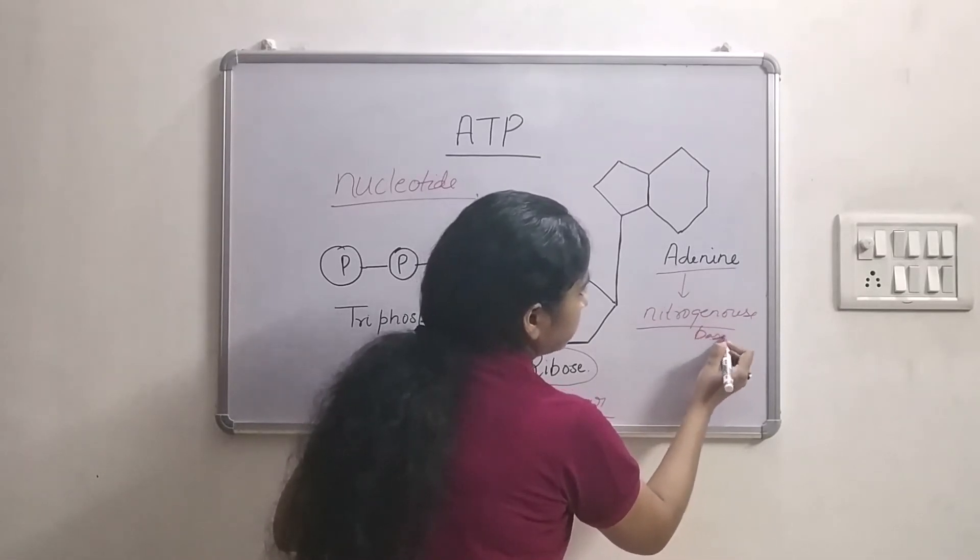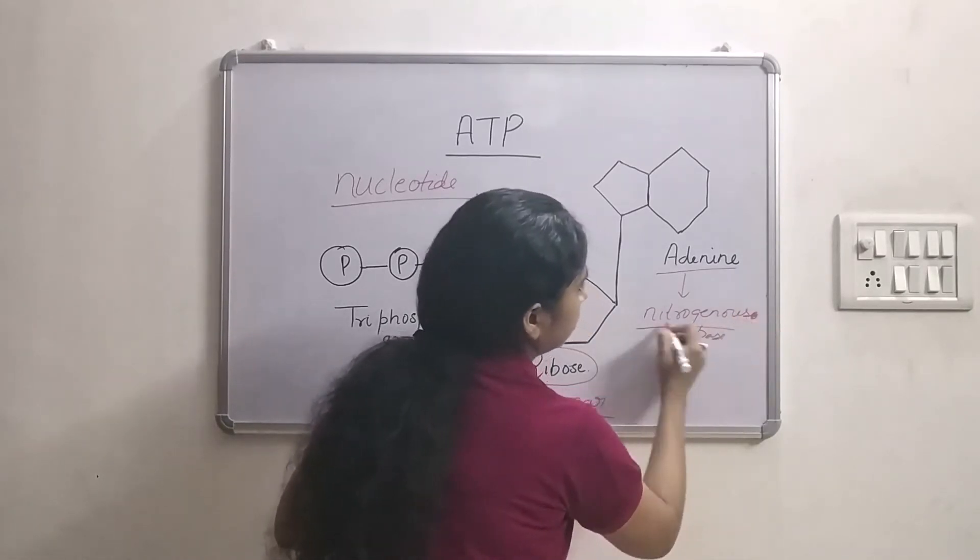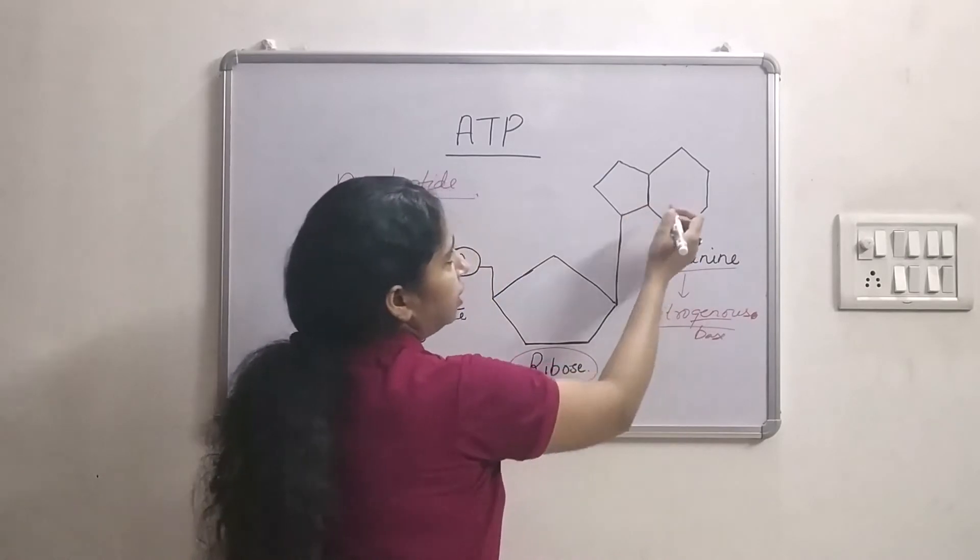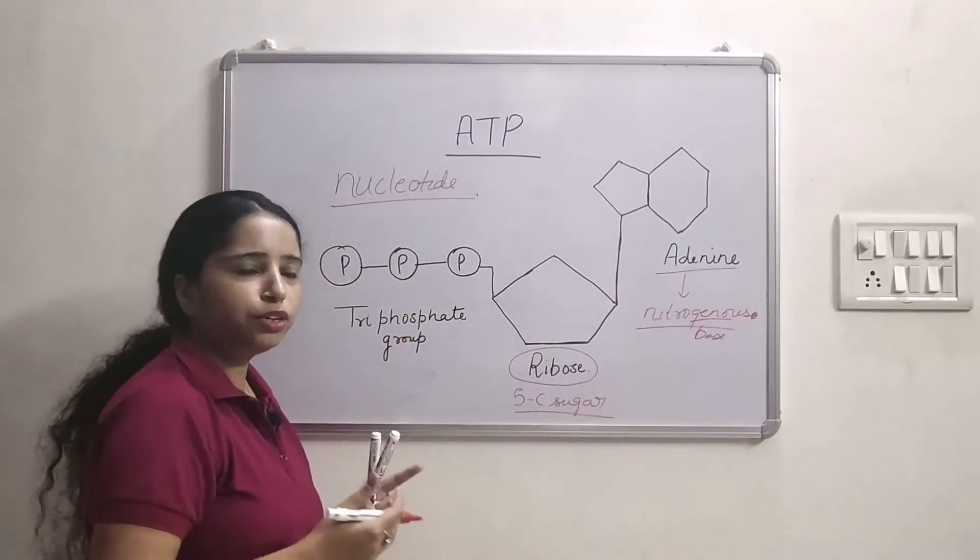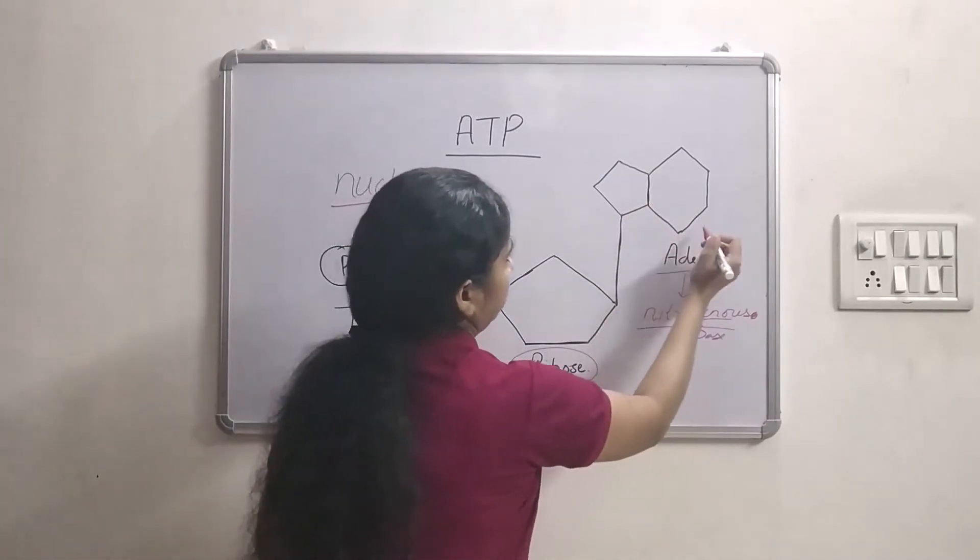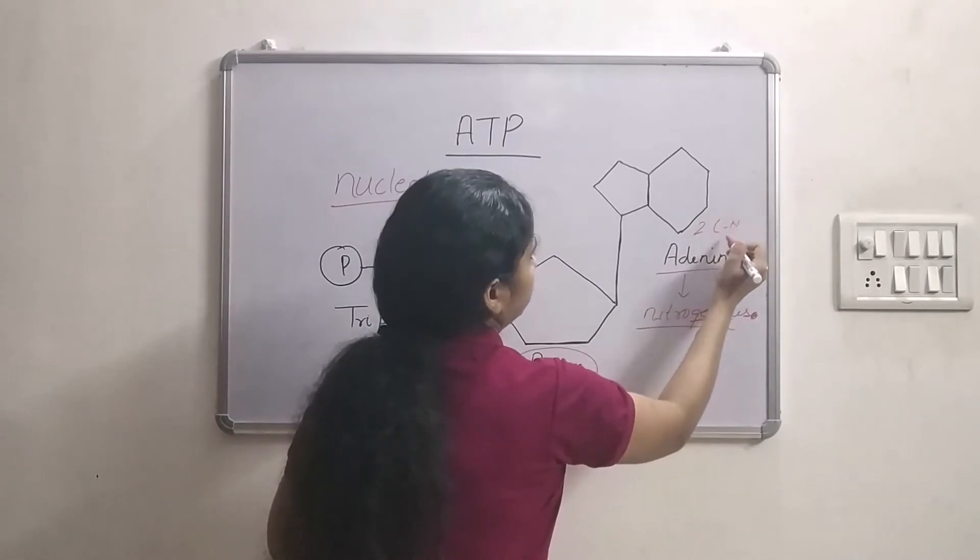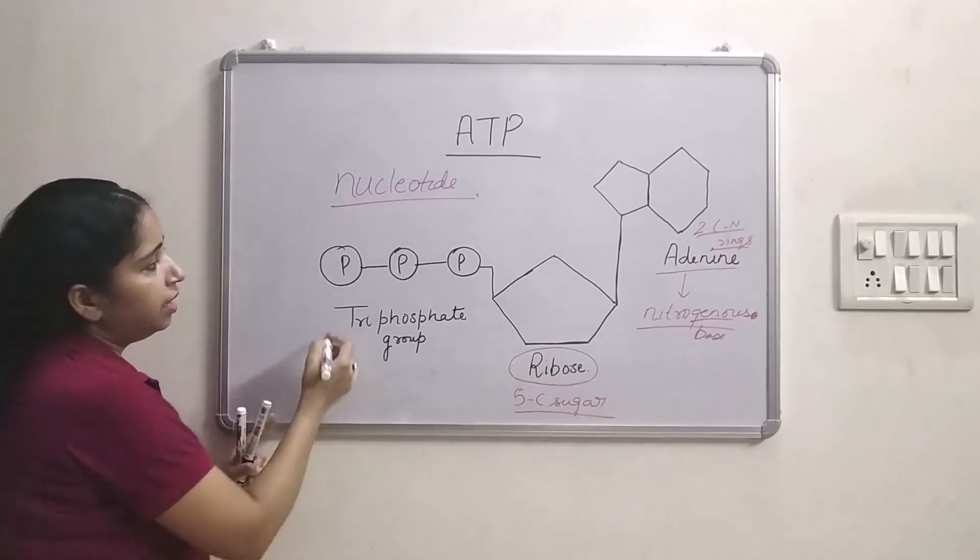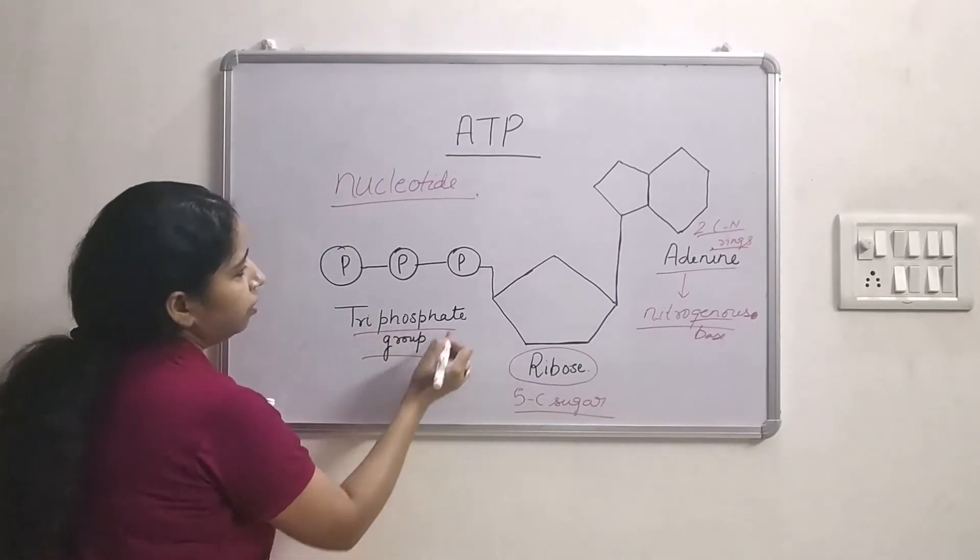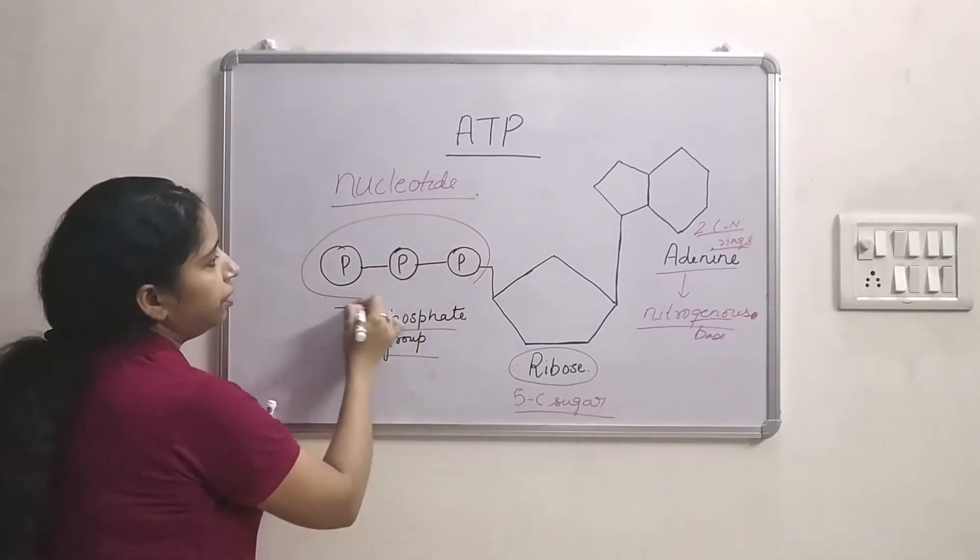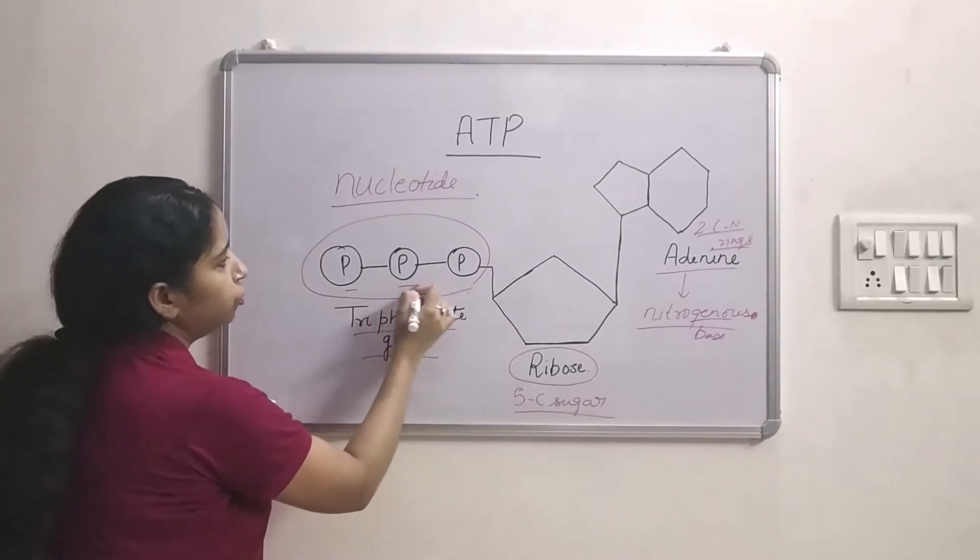Nitrogenous base. Now this adenine consists of two carbon nitrogen rings. Two carbon nitrogen rings. And the third component is triphosphate group which is a chain of three phosphates. One, two, three.